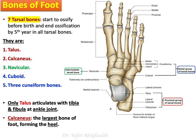We have seven tarsal bones, and by the age of five almost all of these bones are ossified. You can divide them into three groups: a proximal group — the talus and calcaneus; an intermediate group — just one bone, the navicular; and a distal group — the three cuneiform bones plus the cuboid.